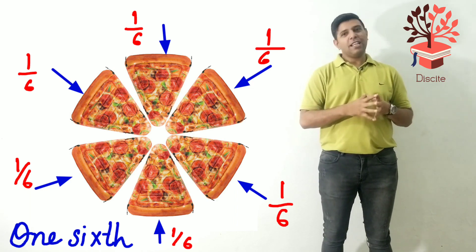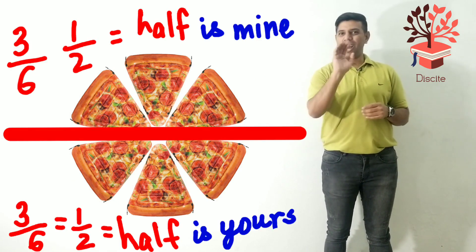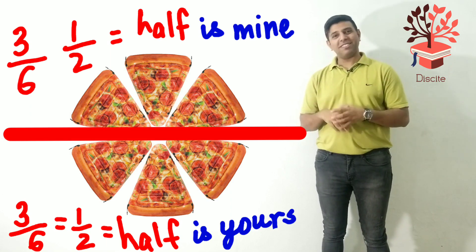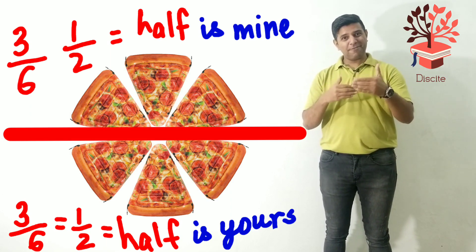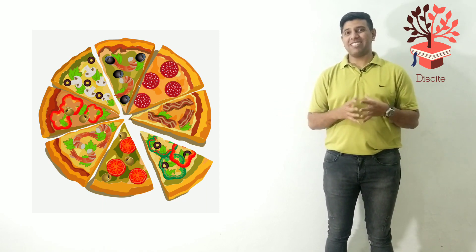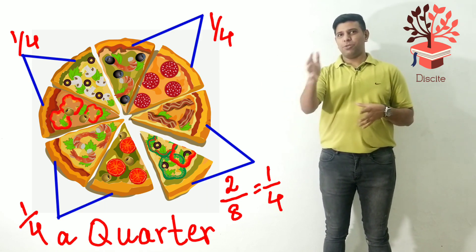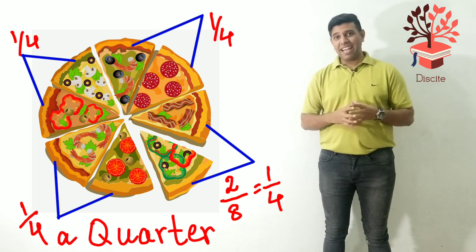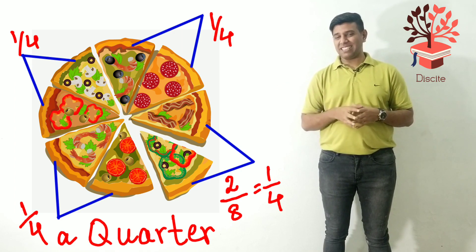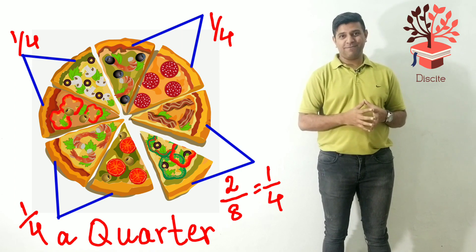Now imagine there are six pieces and it's just you and me and we are both very hungry. So three pieces are yours, three pieces are mine — half each. Now imagine there's another guy who likes his pizza cut into eight pieces and there are four guys sitting there. So four guys, eight pieces — everybody gets two pieces. Together eight. So everybody is getting one fourth, or a quarter of the total.